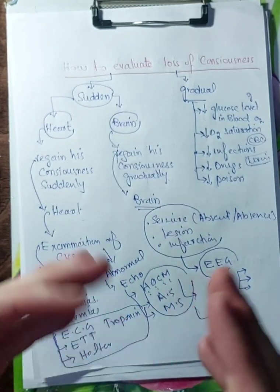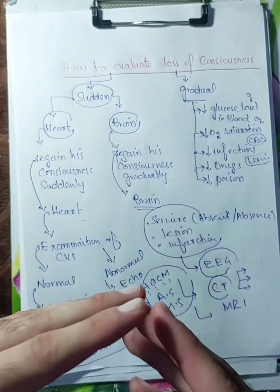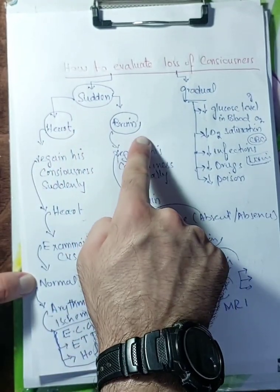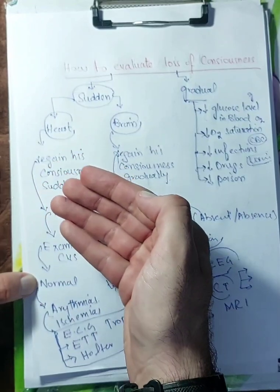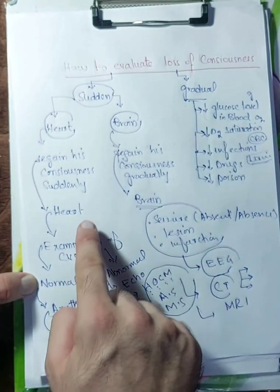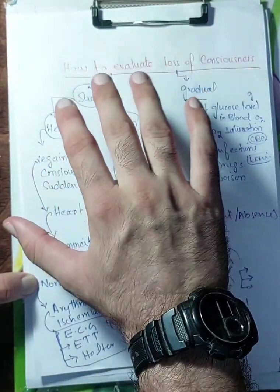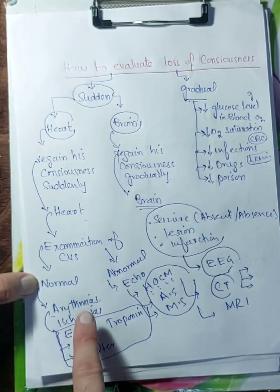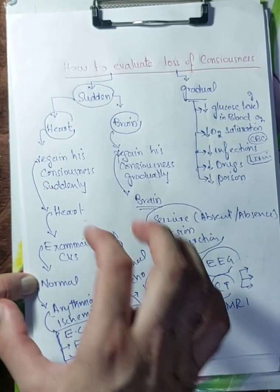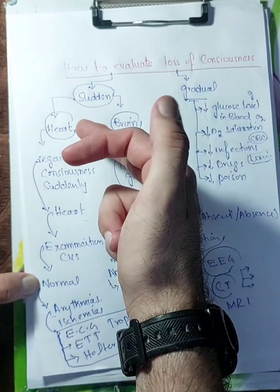Now I will explain it in Urdu. If a person becomes unconscious, suddenly unconscious or gradually unconscious. If someone suddenly loses consciousness, focus on heart and brain. If they regain consciousness suddenly, the problem is in the heart. Then what will you do? We will examine. But if consciousness lost, maybe due to arrhythmias, maybe due to ischemia. You will do tests like ECG, ETT, halter test, and troponin enzyme. These tests will help you in diagnosis. If these are normal, might be functional.